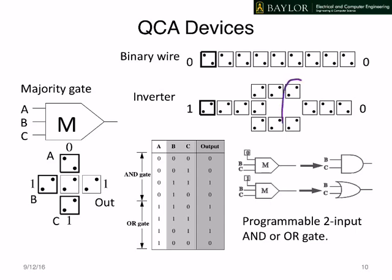The inverter uses a diagonal coupling to invert the bit so that the output is the complement of the input. The majority gate has three inputs, A, B, and C. They exercise equal influence over the majority gate in the middle, and the resulting bit is copied to the output. Any one of the three inputs can function as a control bit. If we set A to 0, then we have AND operation between B and C. If A is set to 1, then we have OR operation between B and C, giving us a programmable two-input AND or OR gate. These, together with the inverter, give us a logically complete set by which we can calculate any logic function we desire.